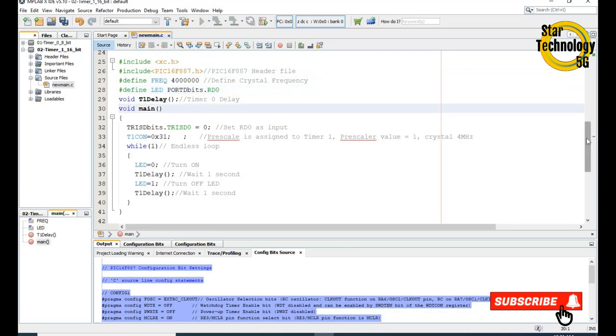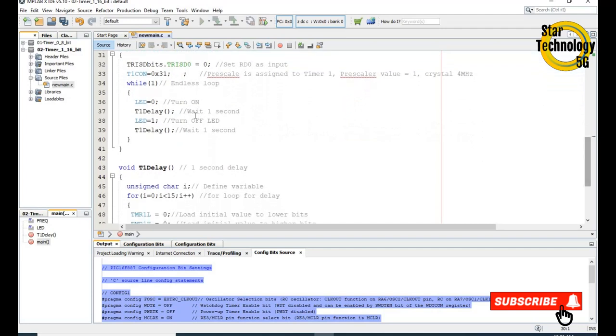From here, the main code starts. In main code, we will set TRISD bit RD0 equal to 0. We will set the RD0 pin as output. After that, we will set T1CON equal to 0x31. We will assign the prescaler, Timer 1, and 4MHz crystal. The prescaler we are using in this project is equal to 1.